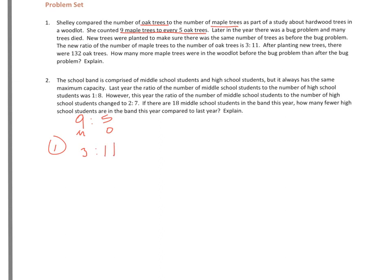The new ratio of the number of maple trees to the number of oak trees is 3 to 11. So there's my ratio now. And again, maple is first, oak is second. After planting the new trees, there were 132 oak trees. How many more maple trees were there in the woodlot before the bug problem than after the bug problem?